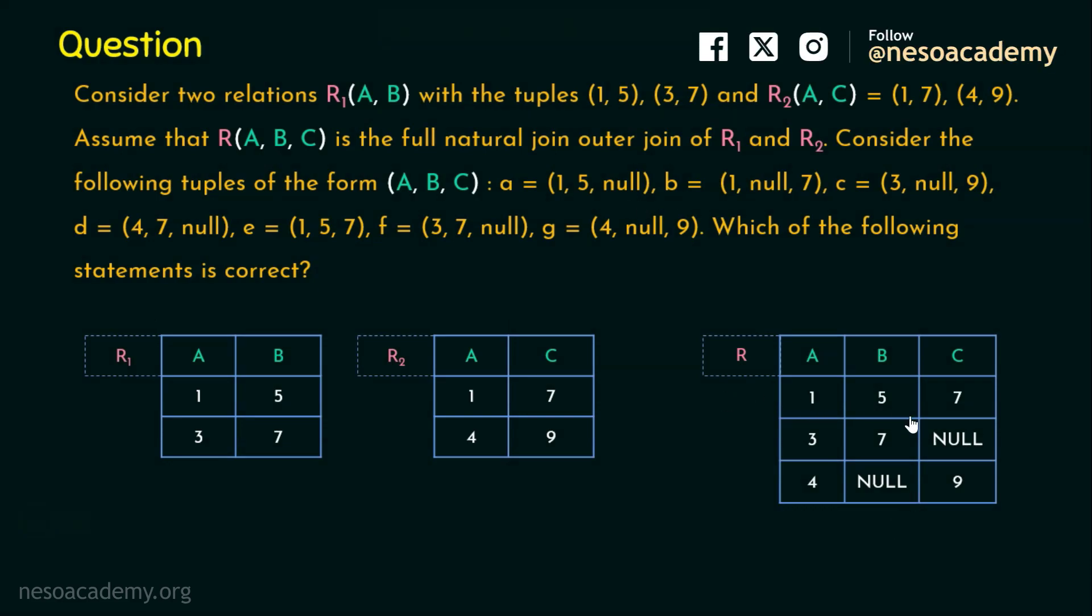Now let's observe (1, 5, 7), where is this? (1, 5, 7) is actually this E, right? (3, 7, null) is actually F, right? And finally, (4, null, 9) is actually G. So the actual full outer join output has the tuples E, F, and G as per the question. But in the question, they have given a lot of tuples like A, B, C, D, E, F, and G. But the actual output contains only E, F, and G.